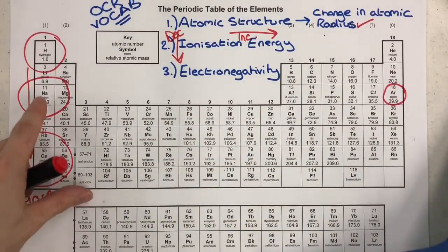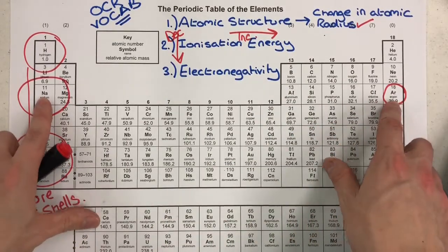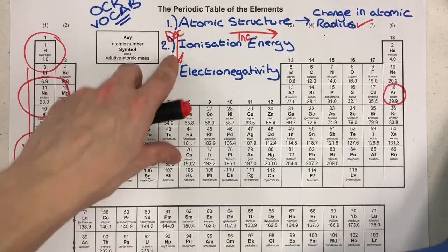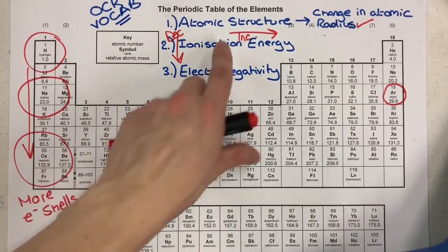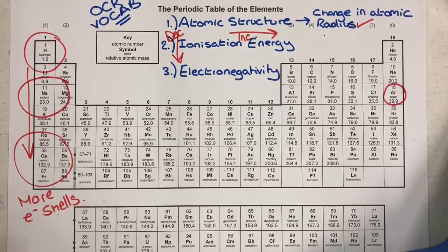So what about ionization energy across a period? Well let's have a look then for sodium and argon again just like we looked at for atomic radius. Down a group ionization energy decreases whereas ionization energy across a period is going to increase. So why is that?